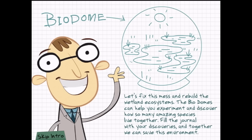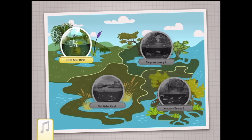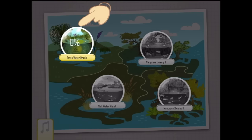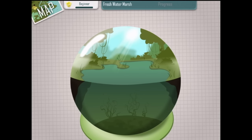The biodomes — that's this big thing up here — can help you experiment and discover how so many amazing species live together. Fill the journal with your discoveries and together we can save this environment. Let's go to that wibbly-wobbly freshwater marsh. Professor Bio says: welcome to my lab. This is our dome, a freshwater marsh habitat home to 13 different species. I know it seems empty right now but you can fill it with amazing creatures — it all depends on your research.